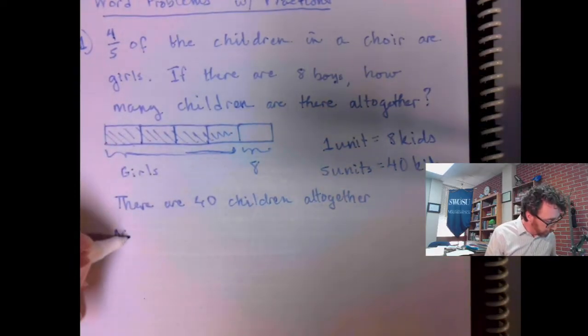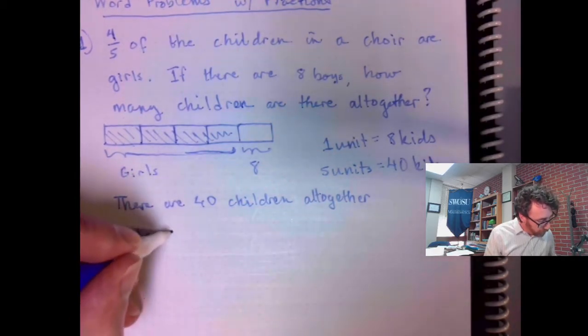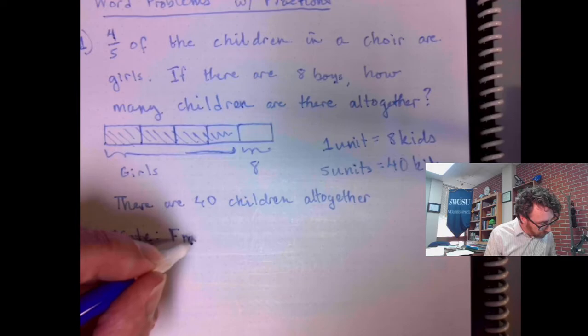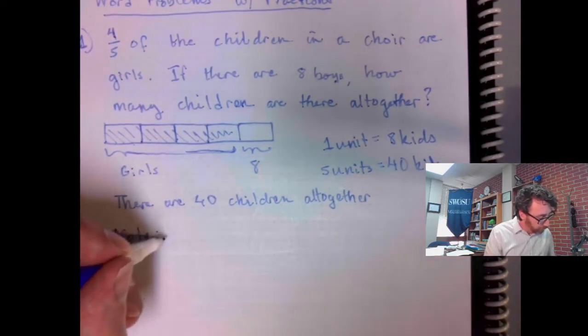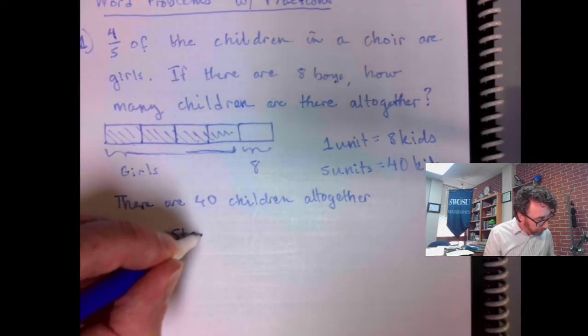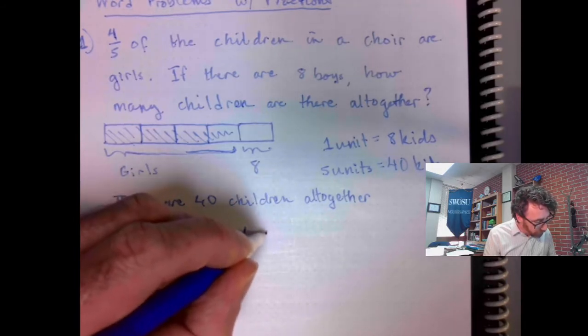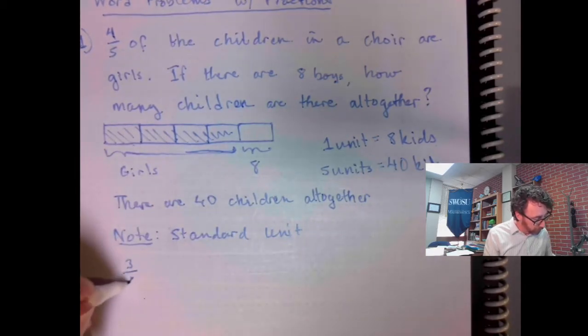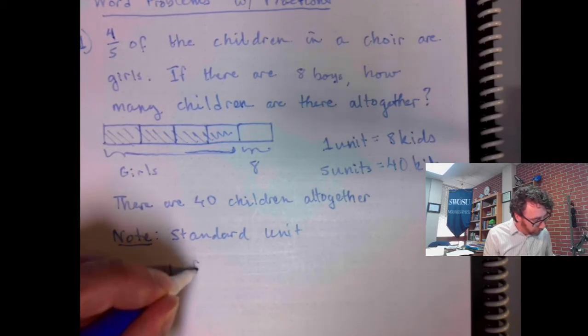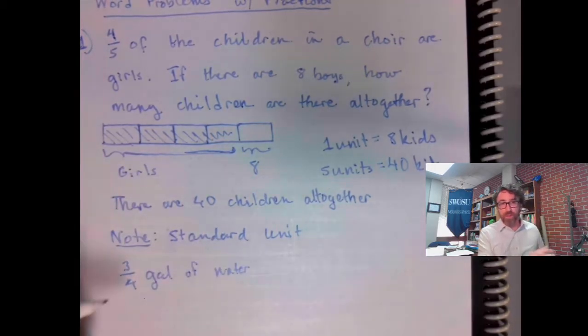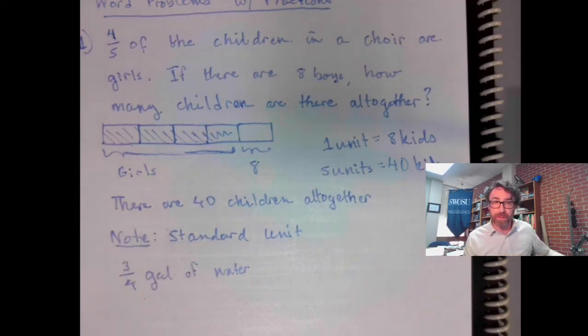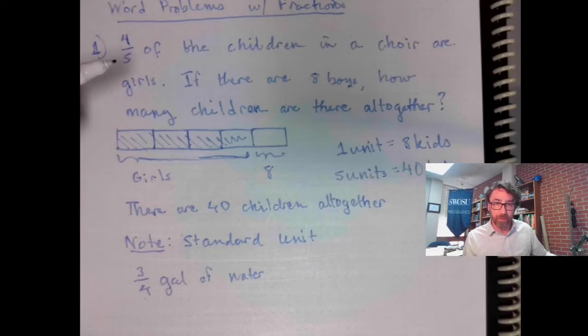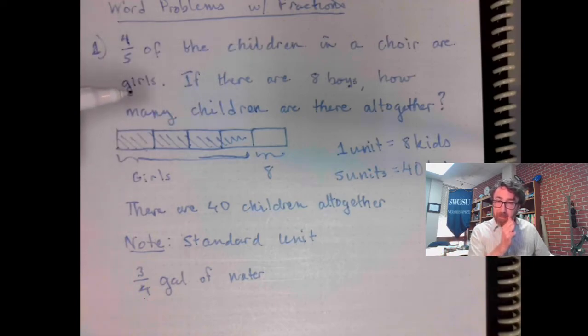One thing I would note is in class, we had discussed something called the standard unit, like three-quarters of a gallon of water. A gallon is the standard unit. Here, the standard unit is the children. Four-fifths of the children are girls.